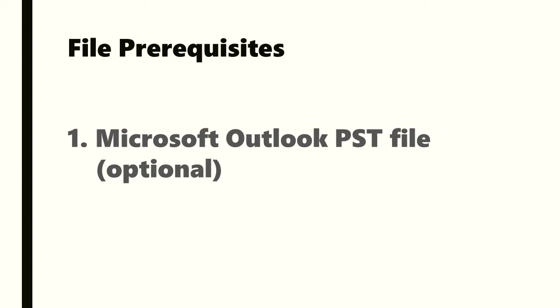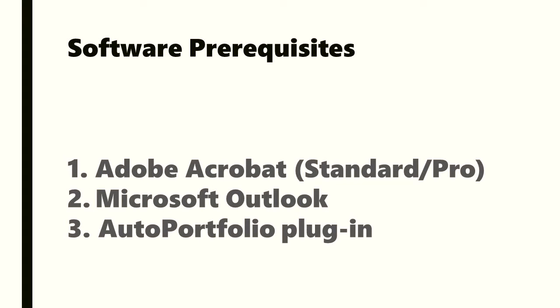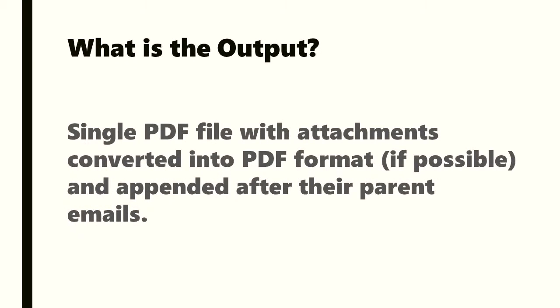File prerequisites are a Microsoft Outlook PST file. Software prerequisites are Adobe Acrobat, Microsoft Outlook, and the AutoPortfolio plugin. The output is a single PDF file with attachments converted into PDF format and appended after their parent emails.